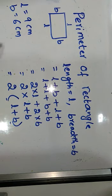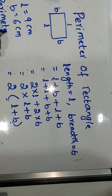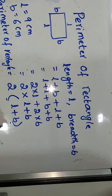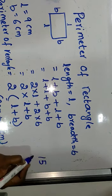What is the formula of perimeter of rectangle? 2 times of L plus B, right? So length is 9 centimeters, breadth is 6 centimeters. What is 9 plus 6? 15 centimeters.